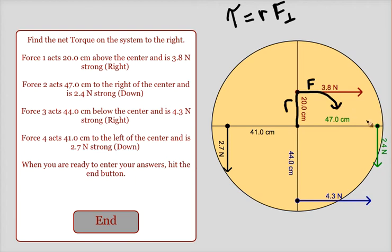This force is making it go clockwise. The green force is making it go clockwise. The blue force is making it go counterclockwise, and the black force is making it go counterclockwise.